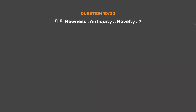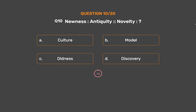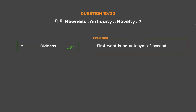Question No. 10. Newness : Antiquity :: Novelty : ? Option A: Culture. Option B: Model. Option C: Oldness. Option D: Discovery. The correct answer is Option C, Oldness. The first word is an antonym of the second.